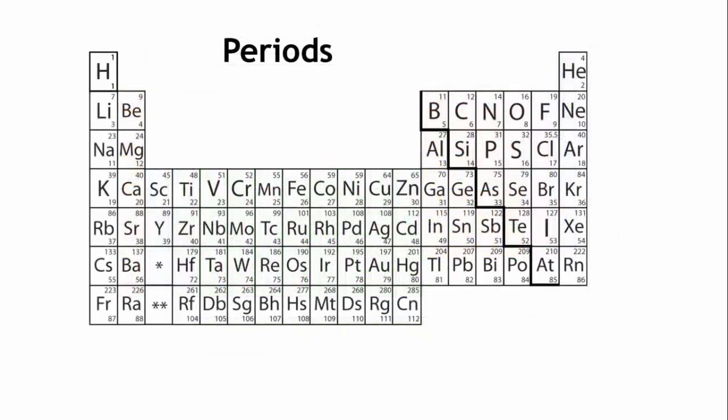The rows going across, from left to right, are periods. Elements in the same period all share something in common. They have the same number of energy shells.